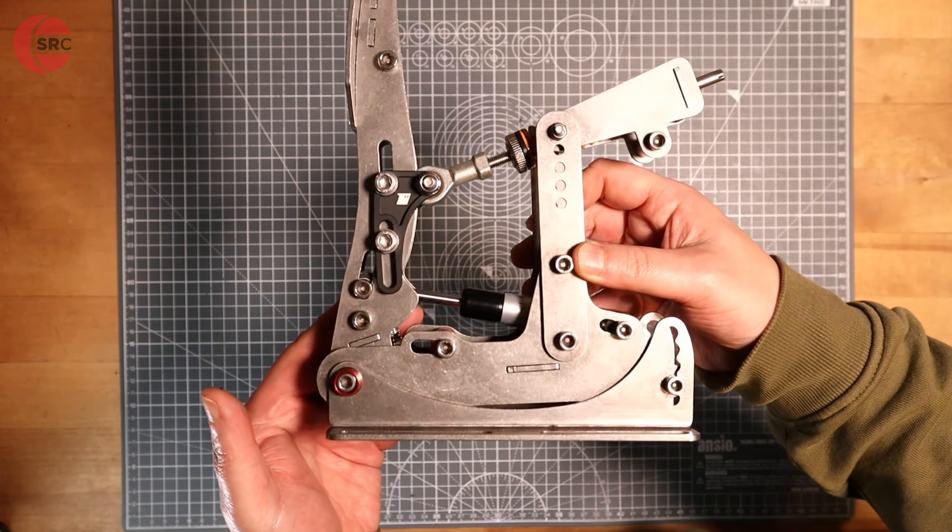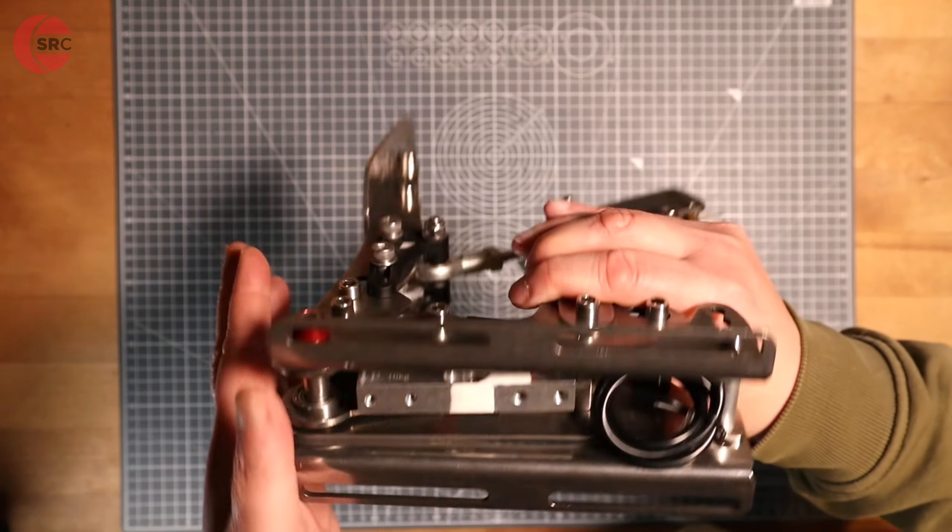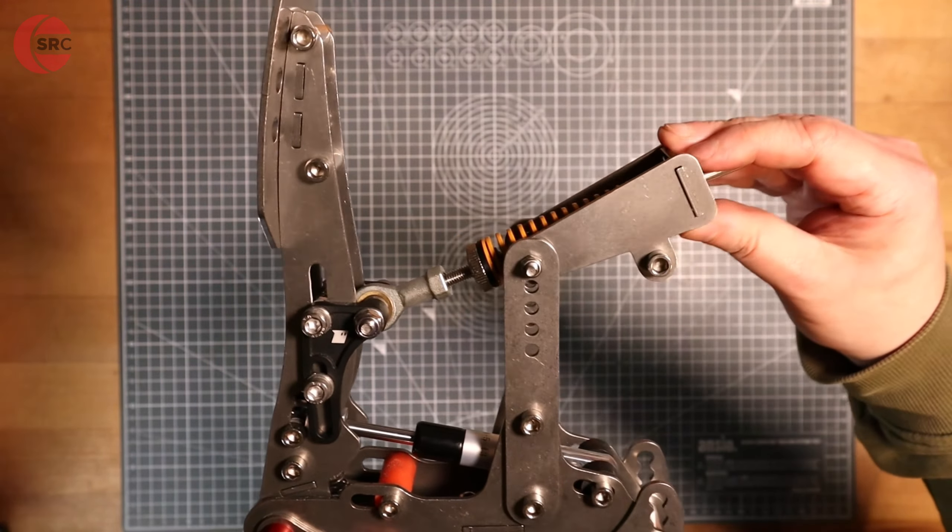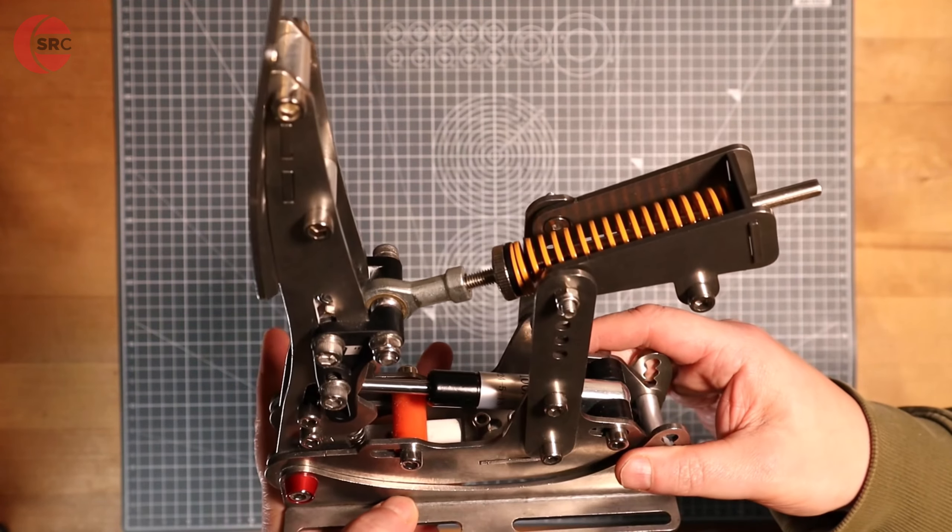The clutch pedal mirrors the same frame style and load cell of the throttle. The pedal face is different to give the pedal a three stage clutch effect. The back of the pedal has a raised spring.